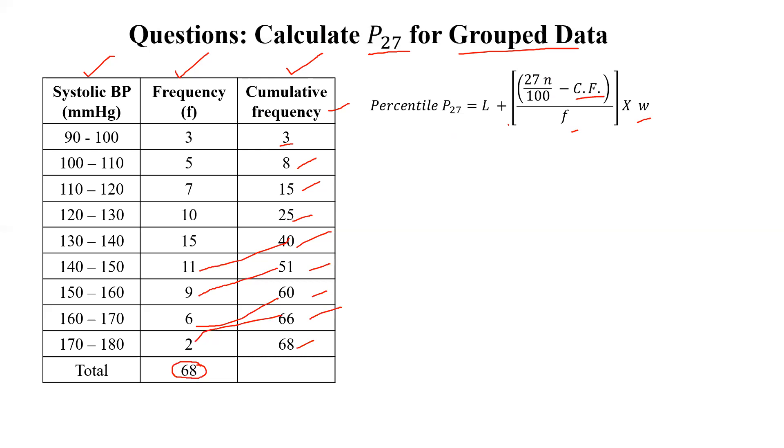Then, after that we have to find out 27N divided by 100. So in solution, 27 divided by 100, N value is here 68. We'll put the N value and calculate simply - we'll get 18.36.